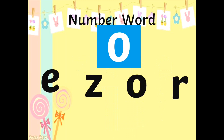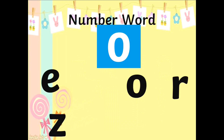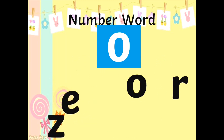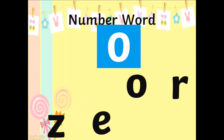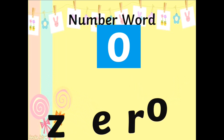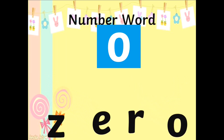What is the first letter? Z. What is the next letter? E. What is the next letter? R. And the last letter is O. Z-E-R-O.